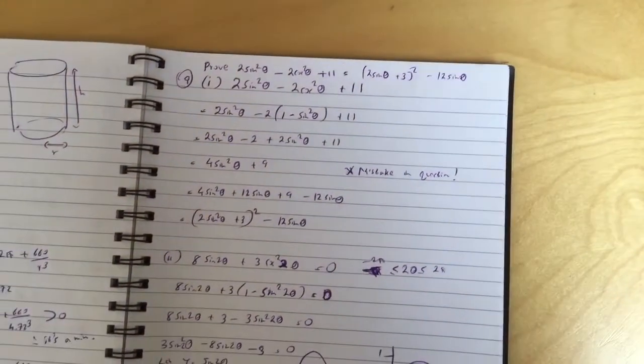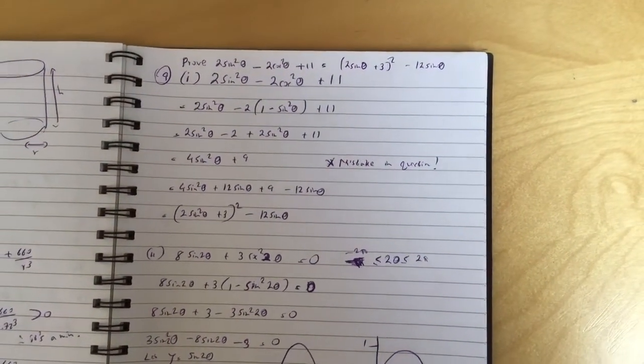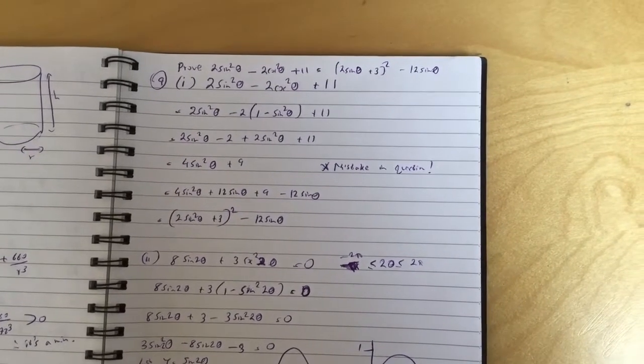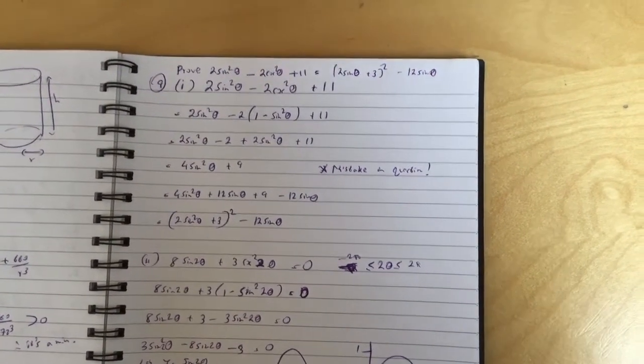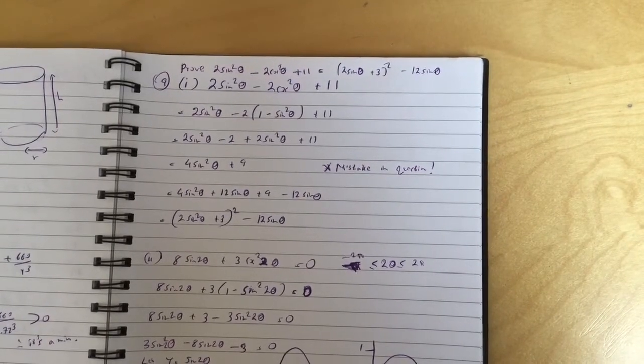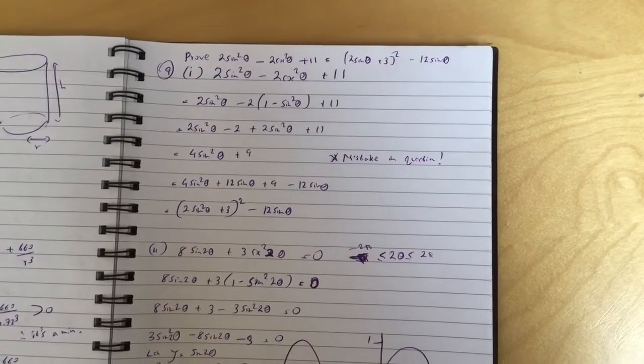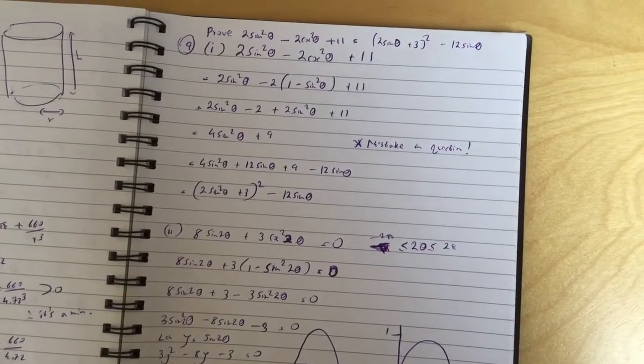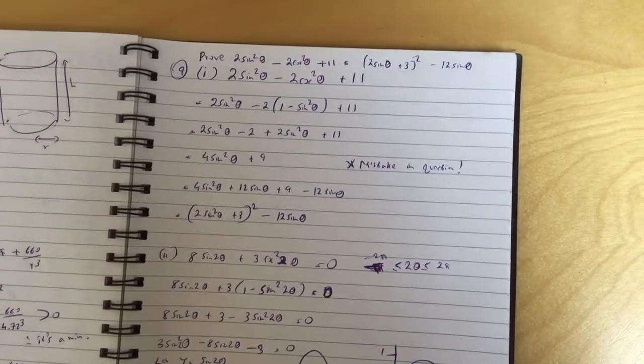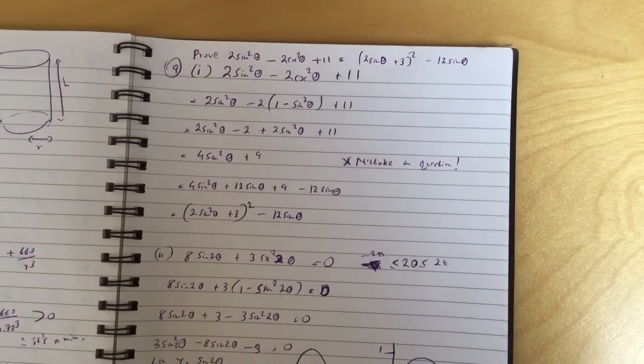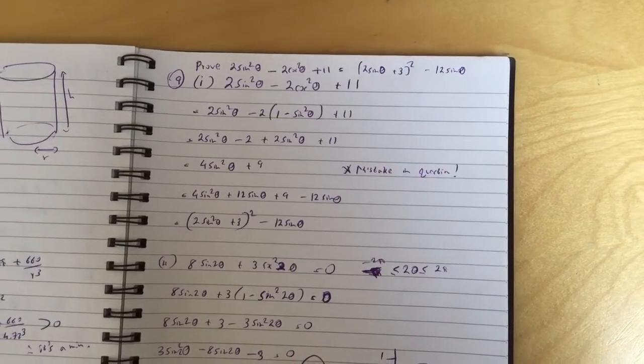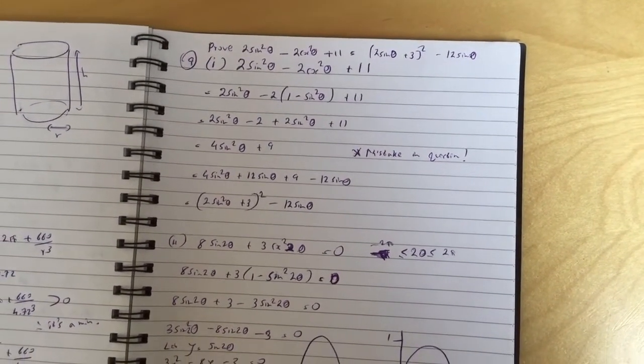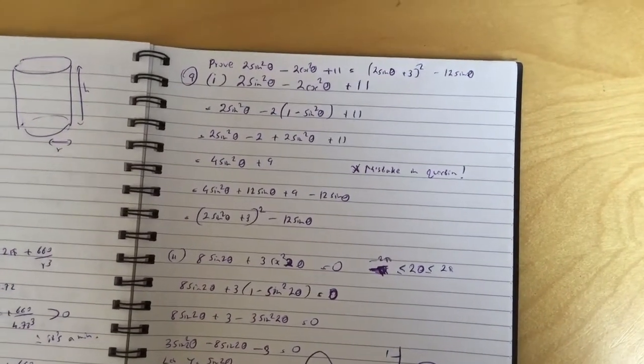Okay, now again there's a mistake in the question for the last question. It's supposed to, the question was supposed to be prove 2sin²θ + 11 = (2sinθ + 3)² - 12sinθ. So here's the proof, guys. So when you get to the fourth step here, 4sin²θ + 12sinθ + 9 - 12sinθ, so what I did is I added and subtracted the 12sinθ, and that helped me complete the square and -12sinθ remained as required.